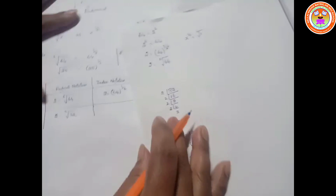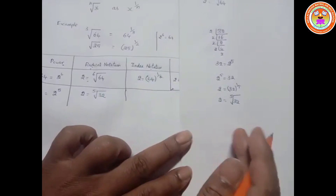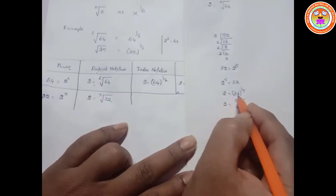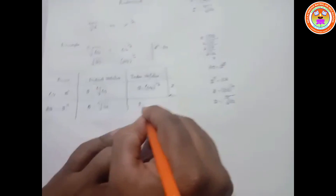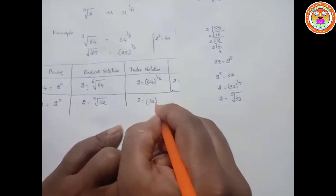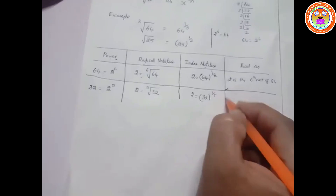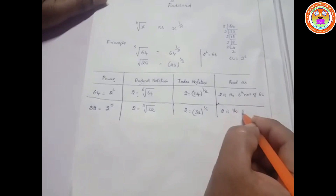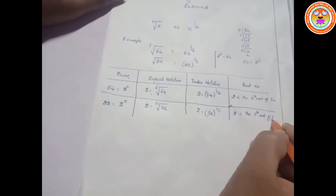Now write in the form of index notation. Index notation is simply 32 to the power of 1 by 5 equals 2, or 2 equals 32 to the power of 1 by 5. You can read this as: 2 is the 5th root of 32.